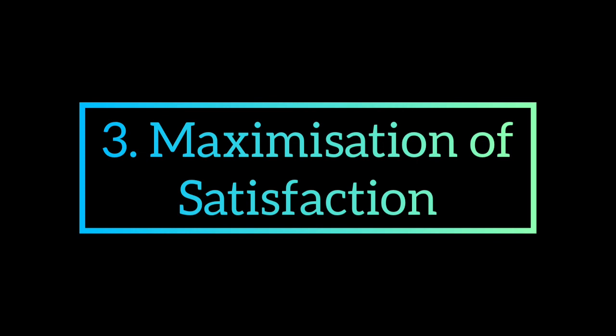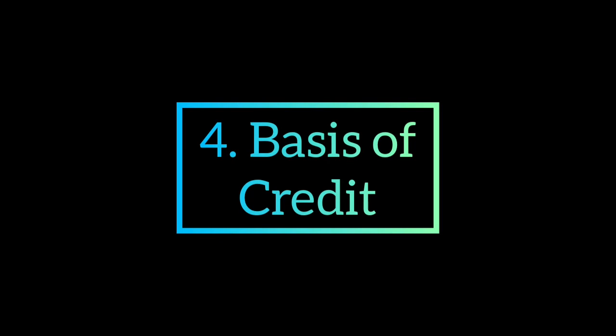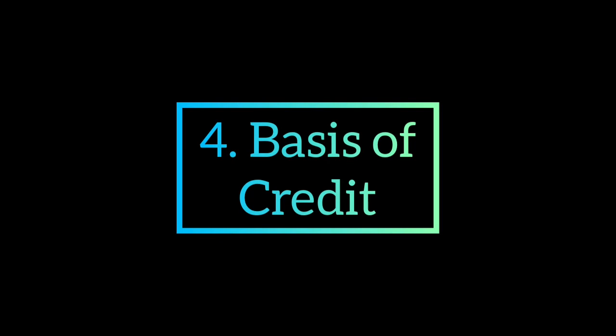Number three: maximization of satisfaction. Money also helps consumers and producers to maximize their benefits. A consumer maximizes his satisfaction and benefits by equating the price of each commodity, expressed in terms of money, with its marginal utility.